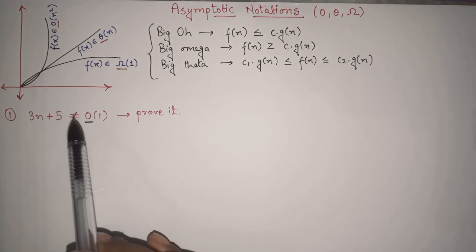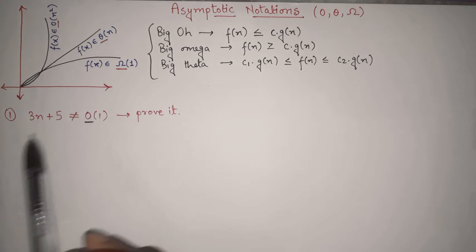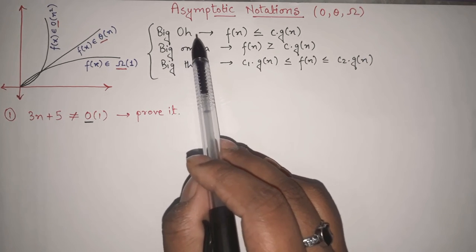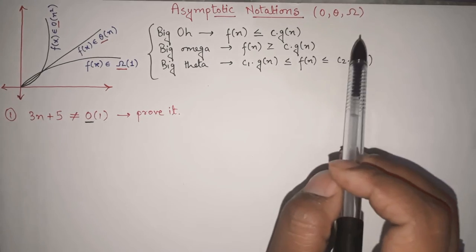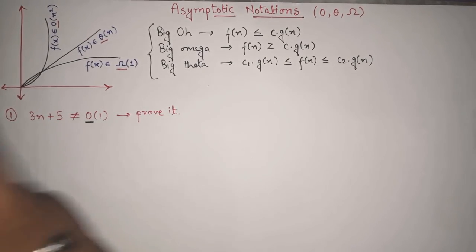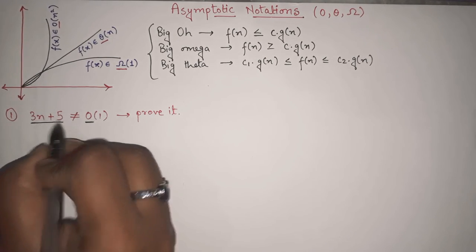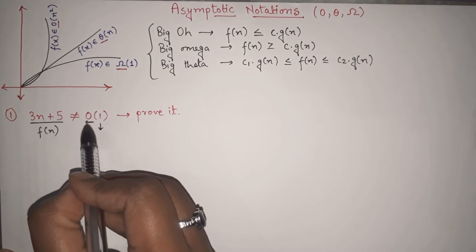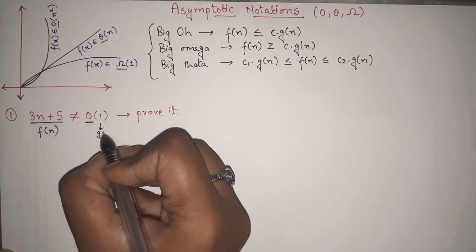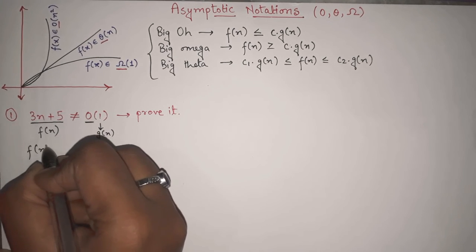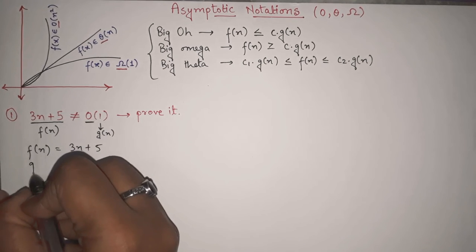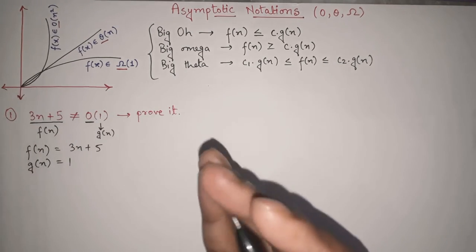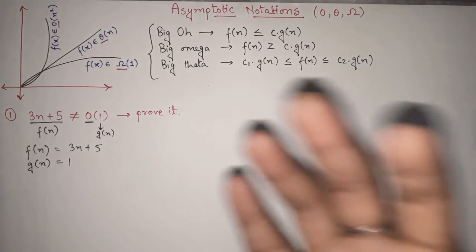The first example: prove that 3n + 5 ≠ O(1). The notation given is Big O. Here, F(n) = 3n + 5 and G(n) = 1. We will try to establish a relation between F(n) and G(n) and then come to a conclusion. Once your concepts are clear, you can solve any such question.